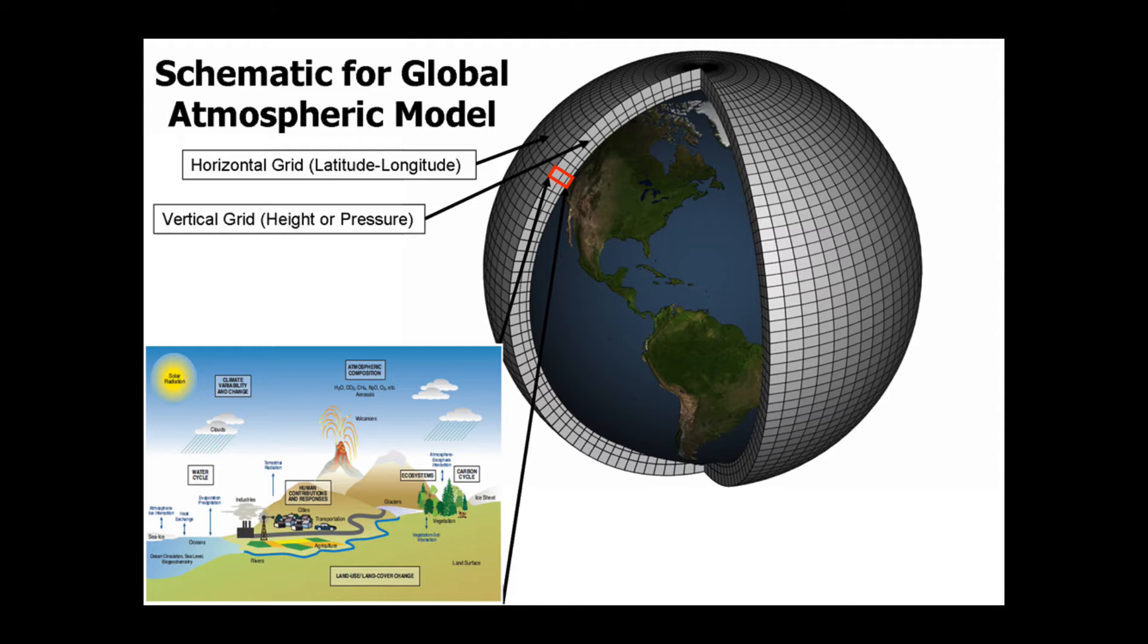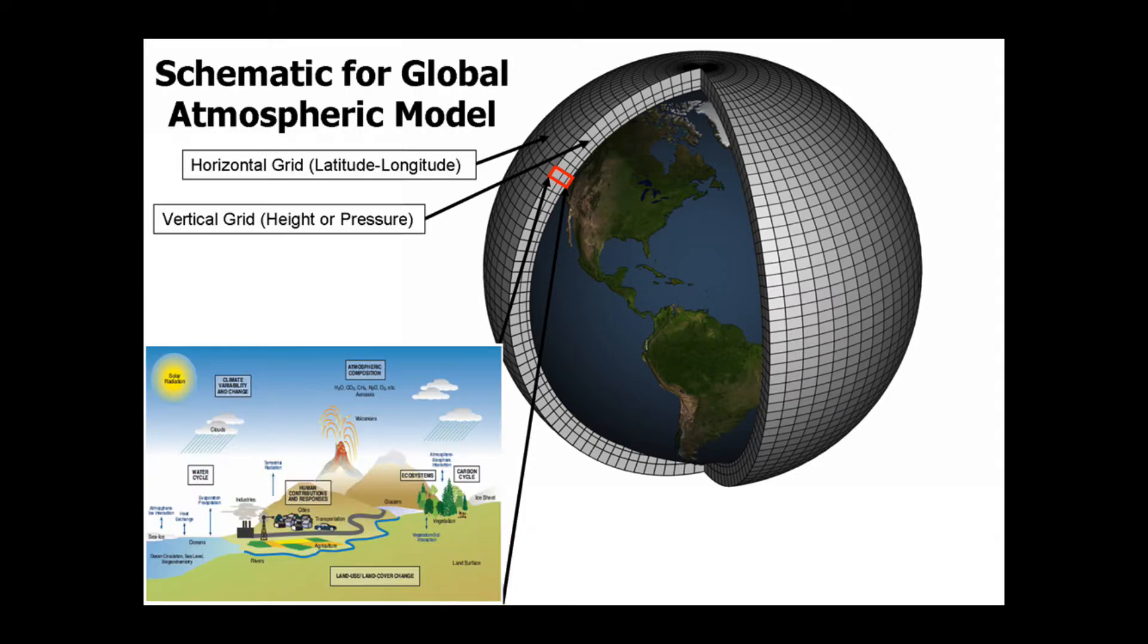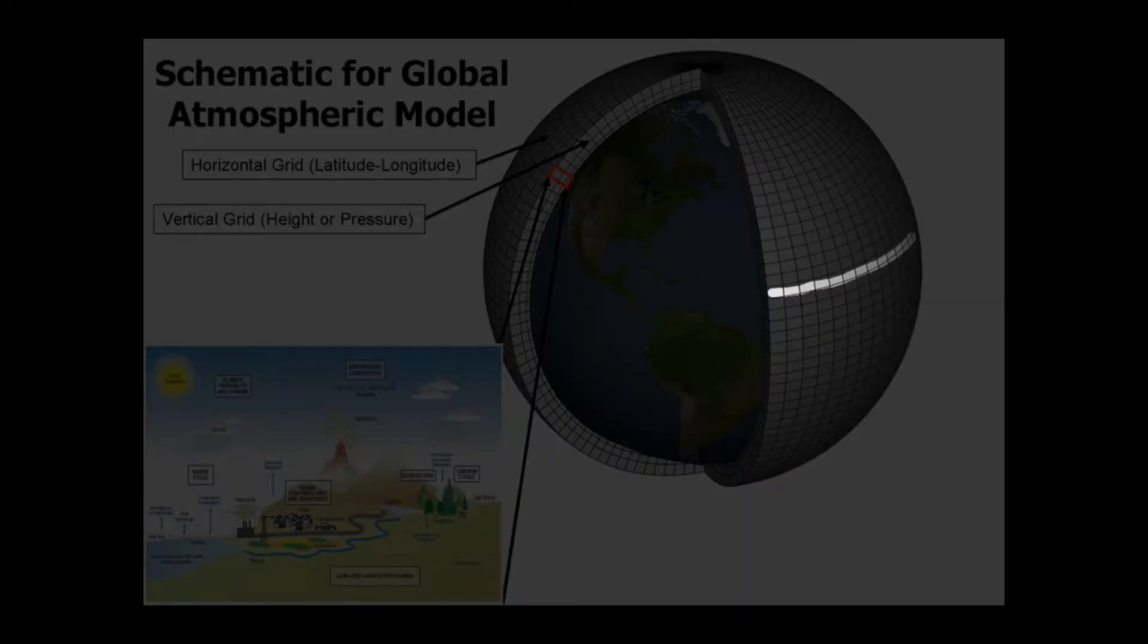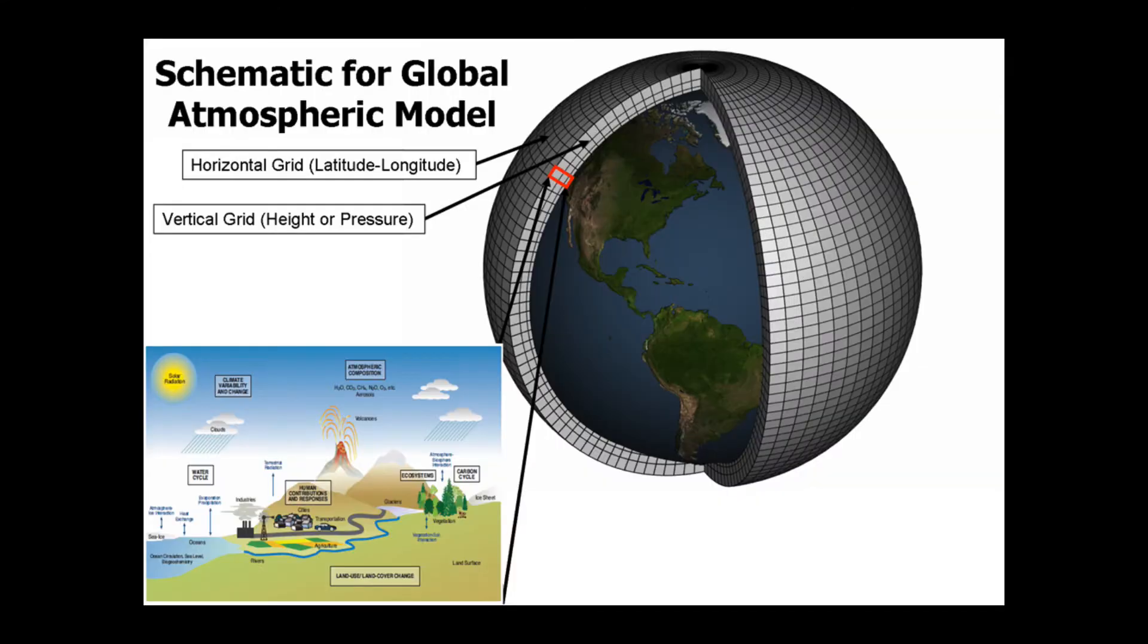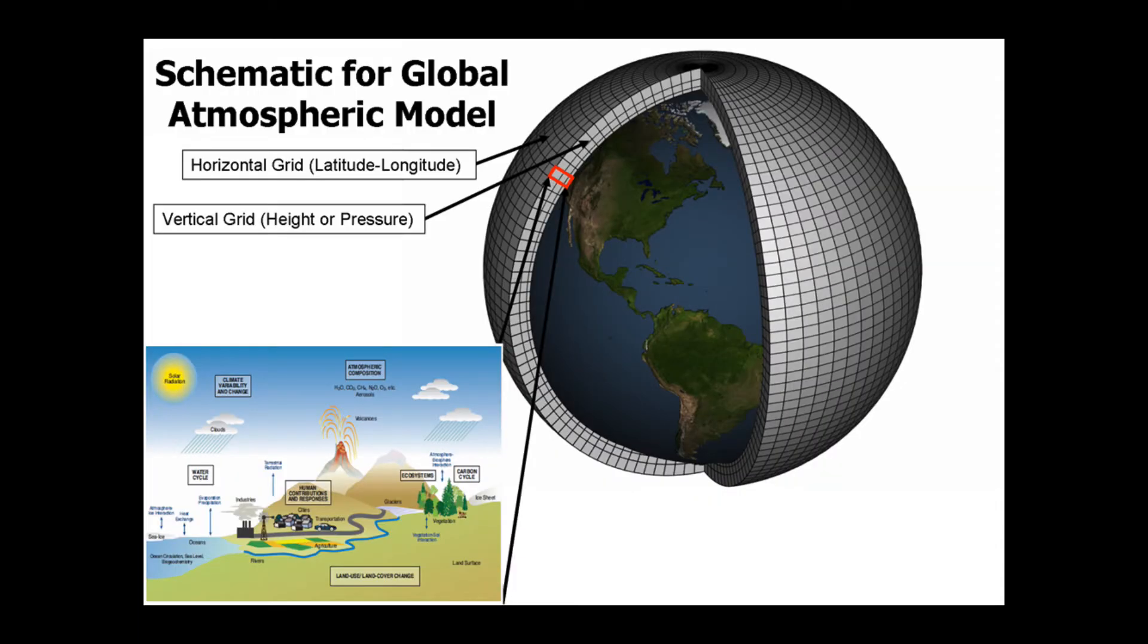And what we do as atmospheric scientists is, if you look at this model of the Earth in the upper right-hand corner here, we've got a model of the Earth's atmosphere, this gray sphere that's enveloping the Earth. What we do is divide the atmosphere up both in the east-west direction and in the north-south direction into thousands of squares. And then we also divide the atmosphere in the vertical direction so that really now we have thousands of cube-like shapes. The atmosphere ends up being divided up into these cube-like shapes.